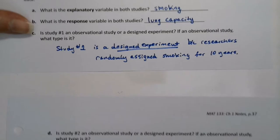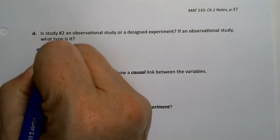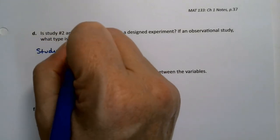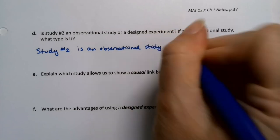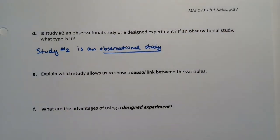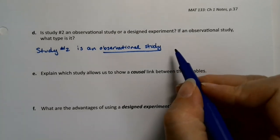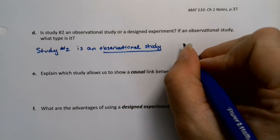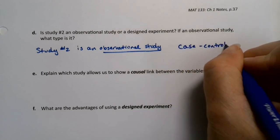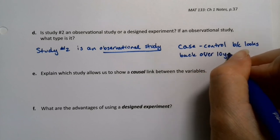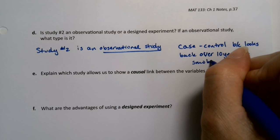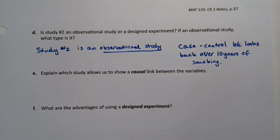Study two would be a case control study. Study number two is observational because they're just seeing who already was smoking. It's retrospective — looking into their past, asking them to reflect back on the last 10 years of smoking. Although it does get their lung capacity only at that moment in time, one could make an argument for cross-sectional, but it's case control because it's asking them to reflect back on their 10 years of smoking.